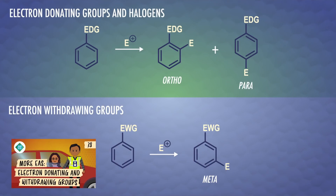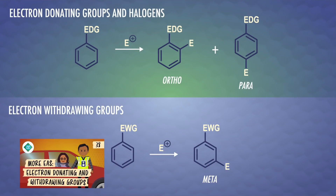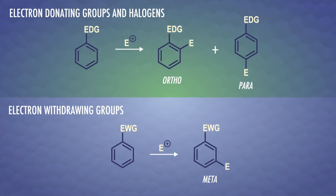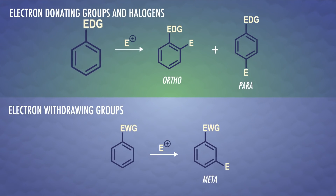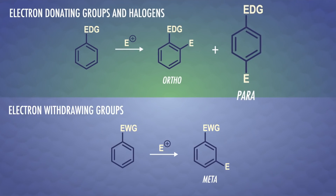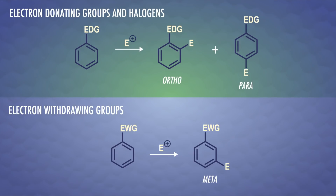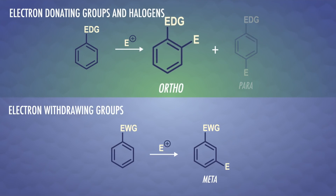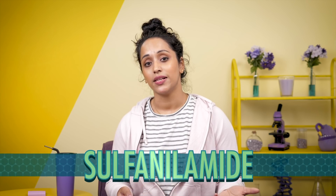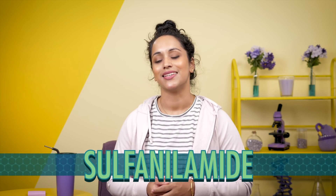In episode 38, we learned that EAS reactions are influenced by groups already on the ring, which direct the incoming group to a specific spot. Electron-withdrawing groups usually direct new groups to the meta position, and electron-donating groups direct new groups to the ortho and para positions. We usually want either the ortho or para product, not both, so in the lab we'll need to purify one compound from the mixture. If we want the para product exclusively, sometimes we can block the ortho positions with a bulky group. Let's take a peek at the synthesis of sulfanilamide, one of the first broadly used antibiotics, to see this in action.